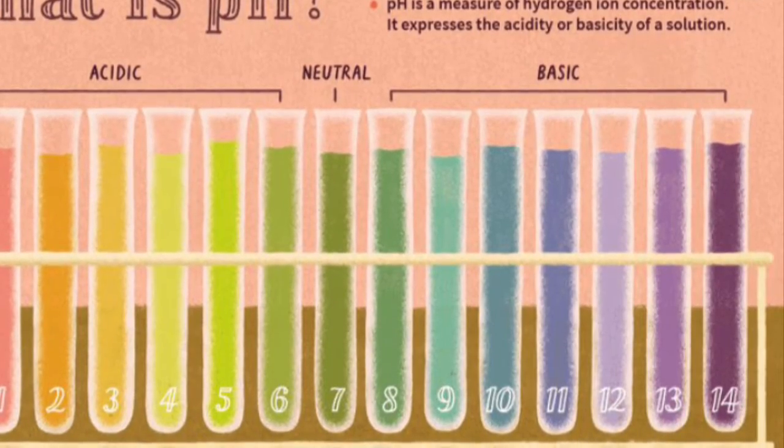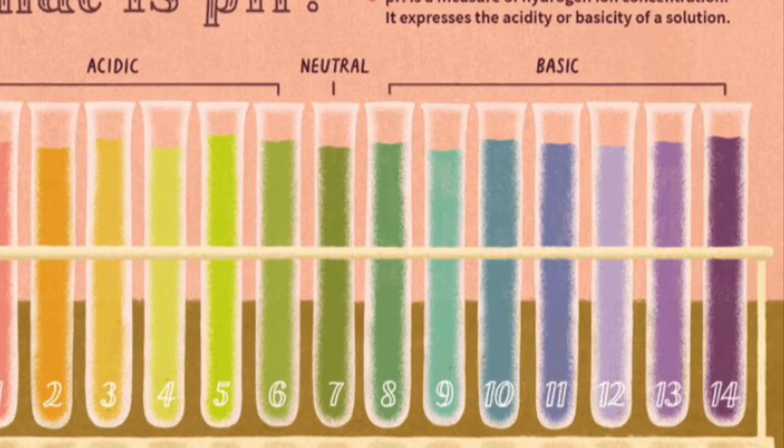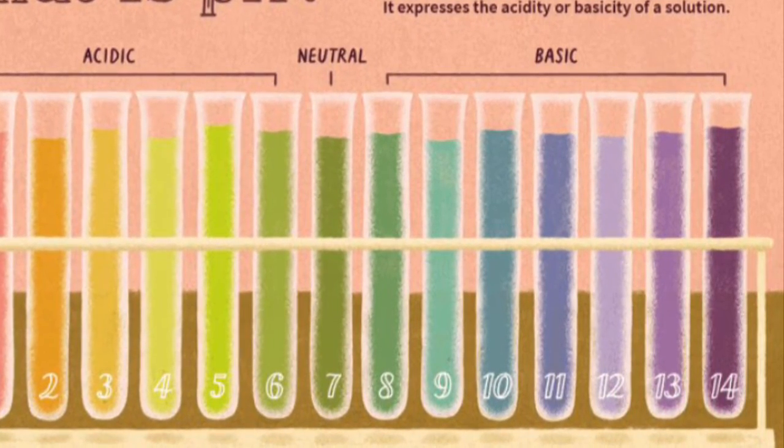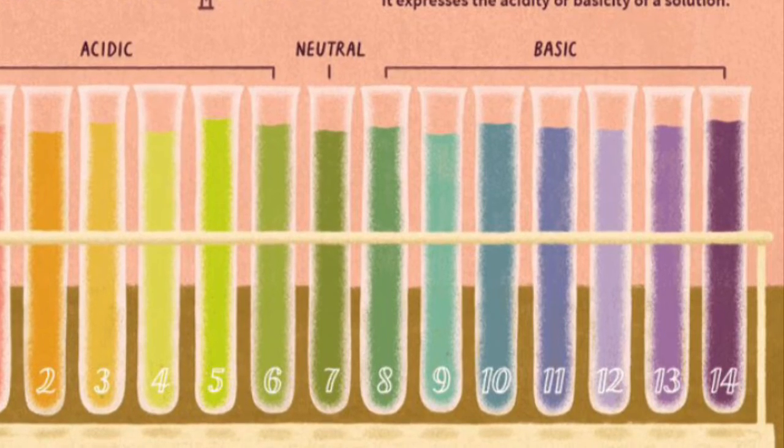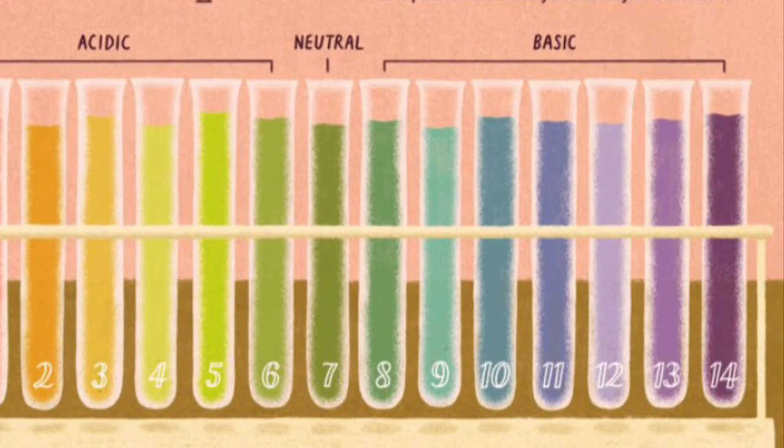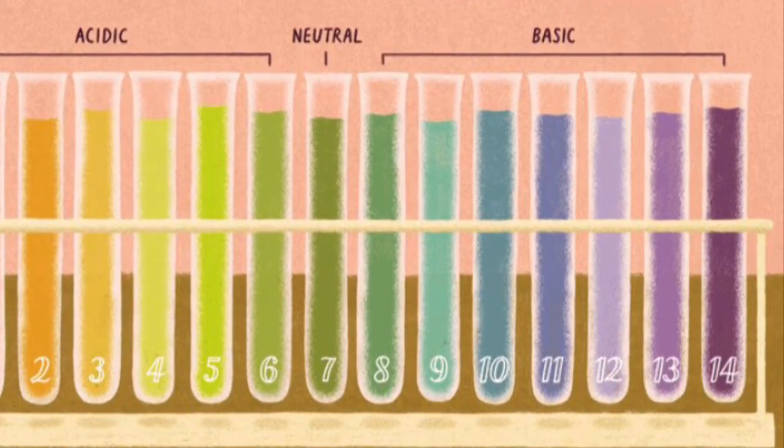The way the pH scale works is that the pH scale ranges from 1 to 14. Anything from 0 to 6 is acidic, while anything from 8 to 14 is basic.